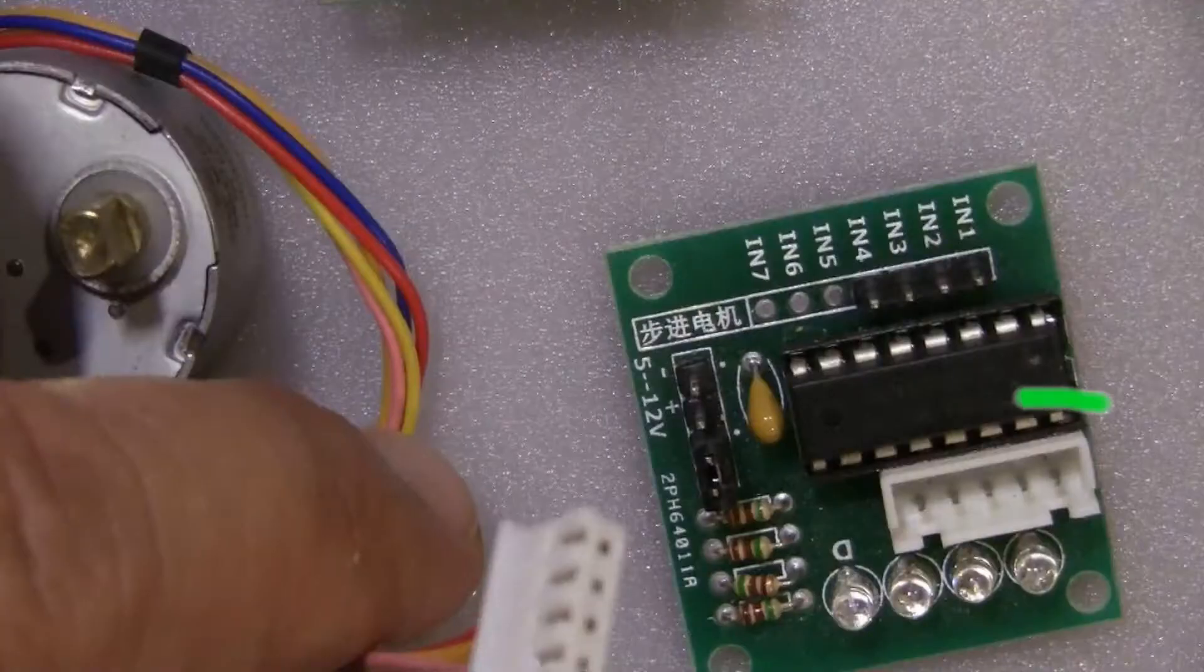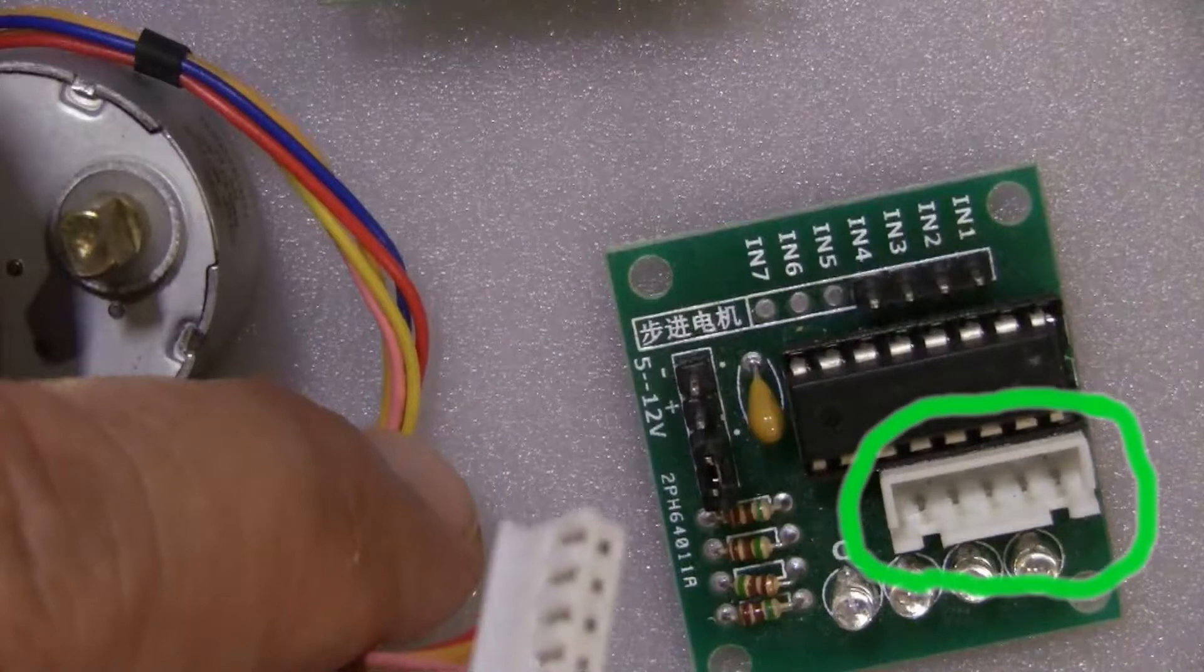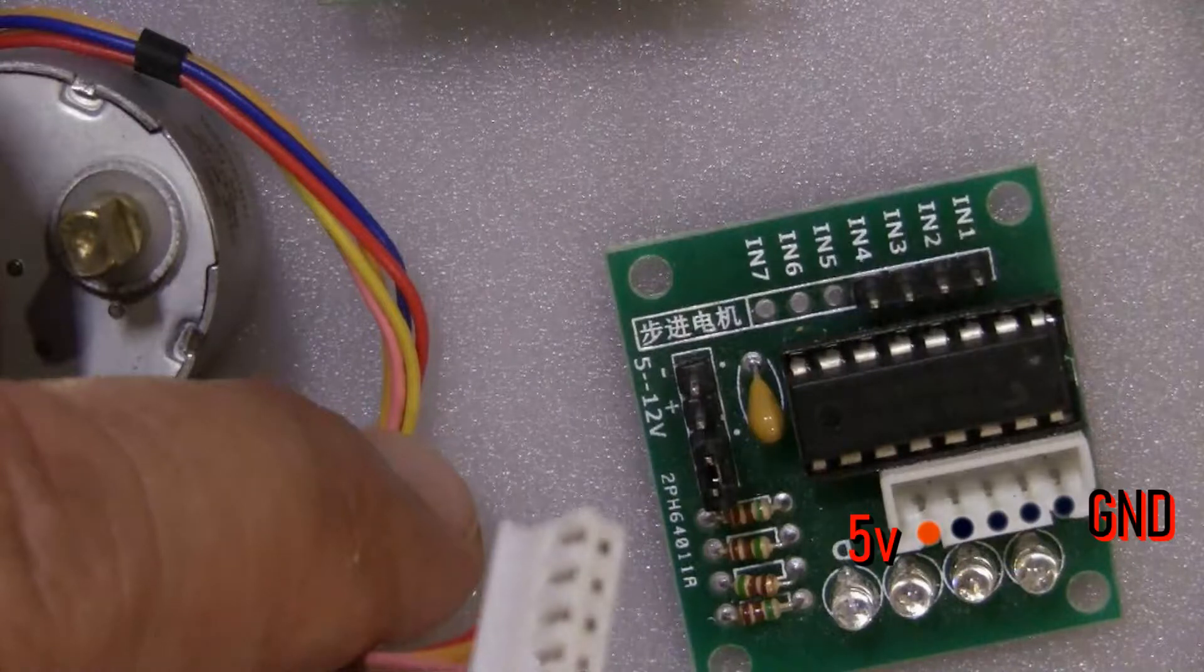How to connect it? First identify the 5-pin motor connector. The first pin on the left is going to be the 5-volt and the rest 4 are ground.